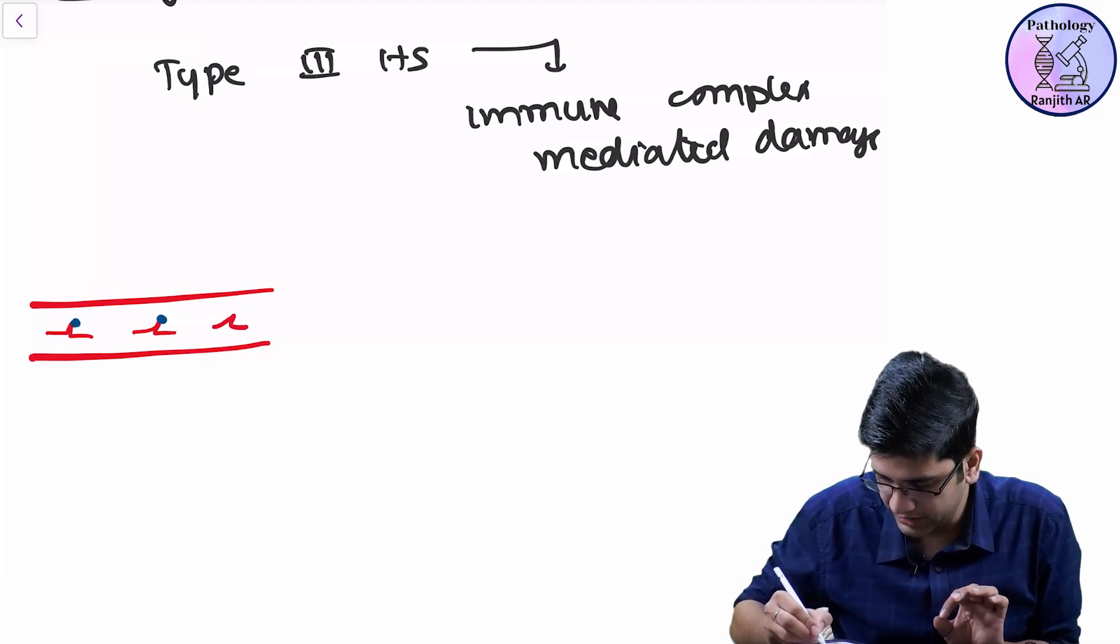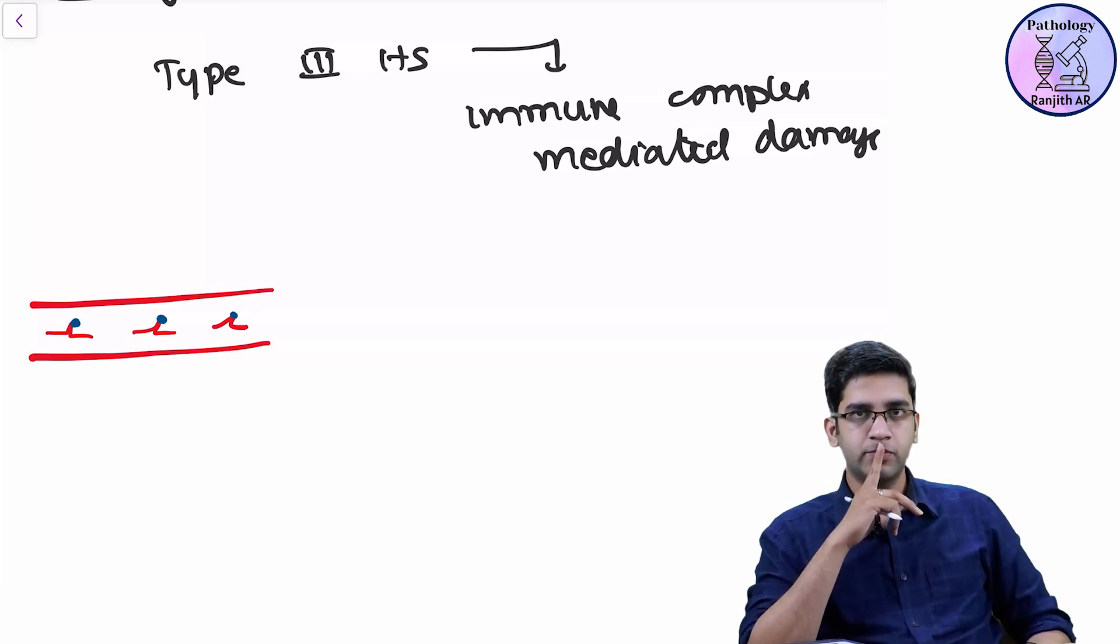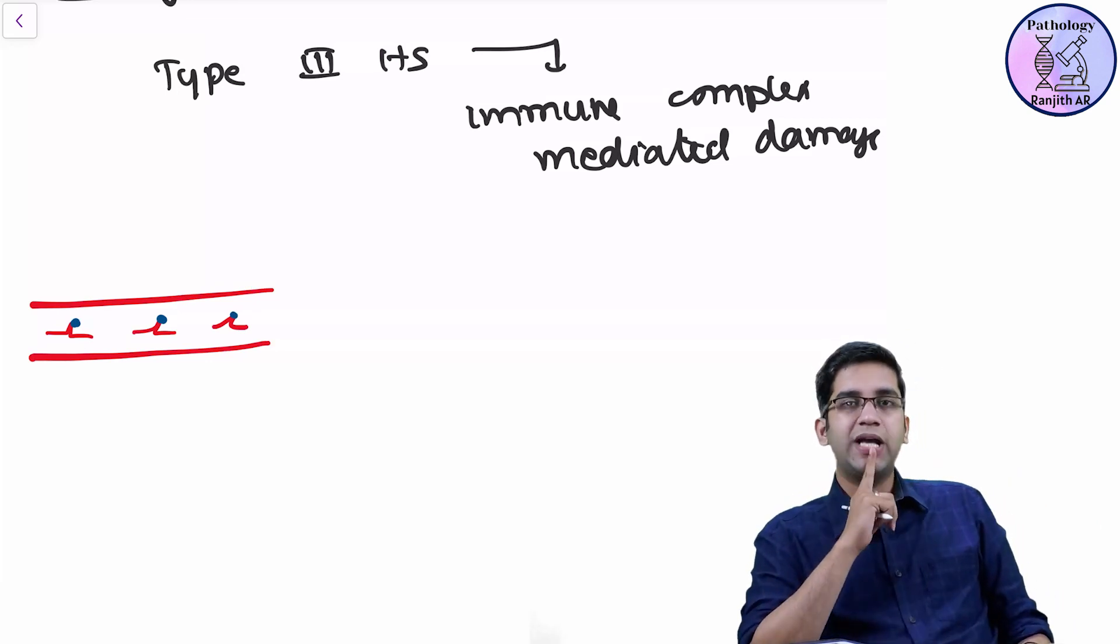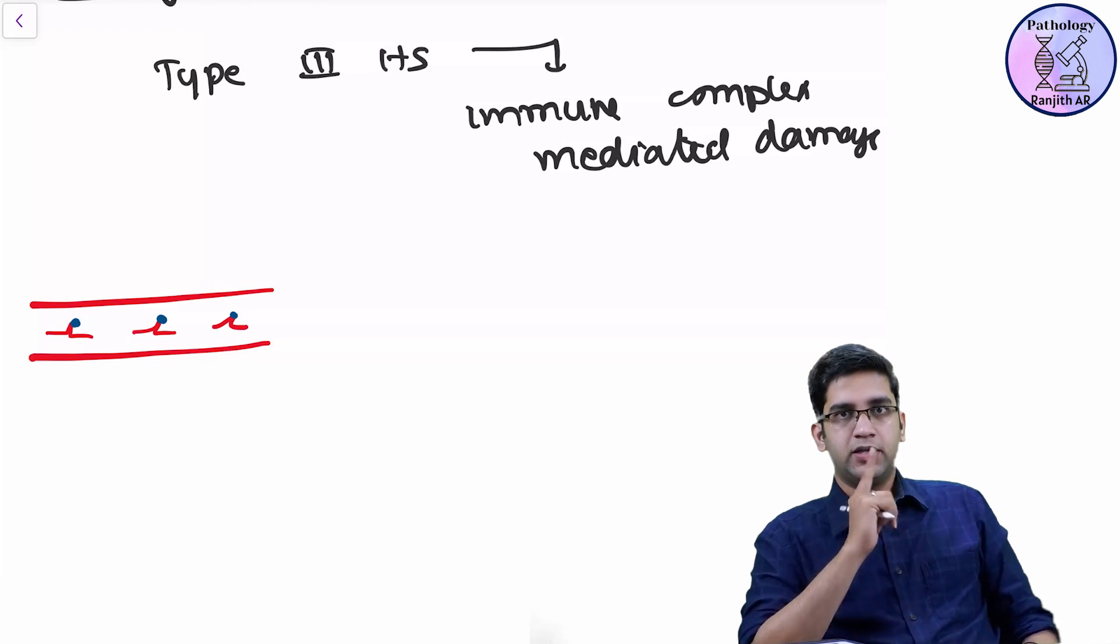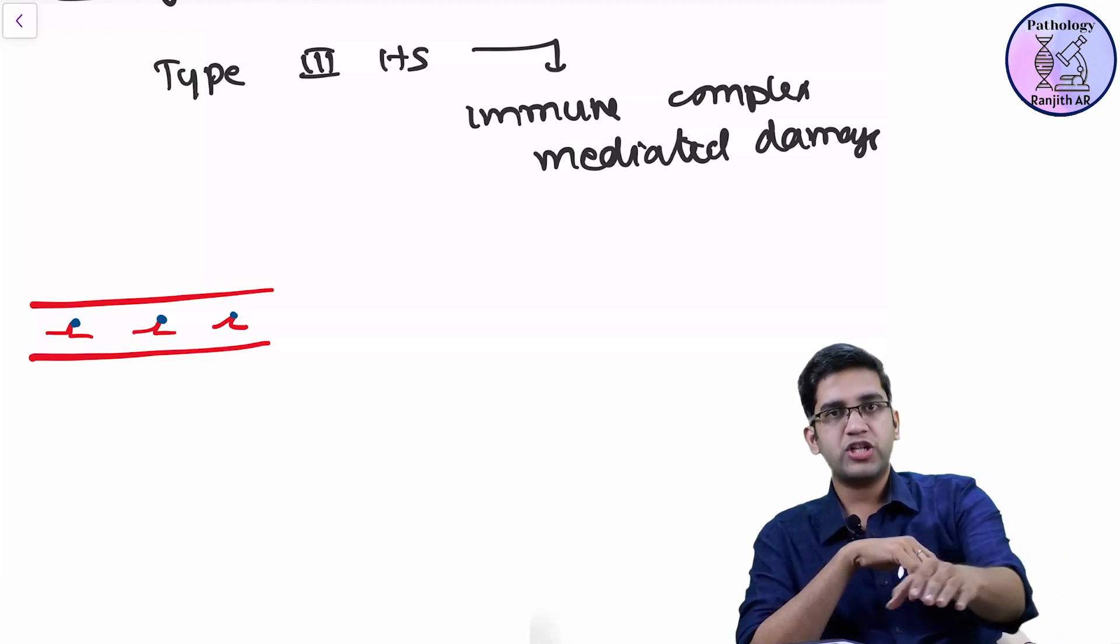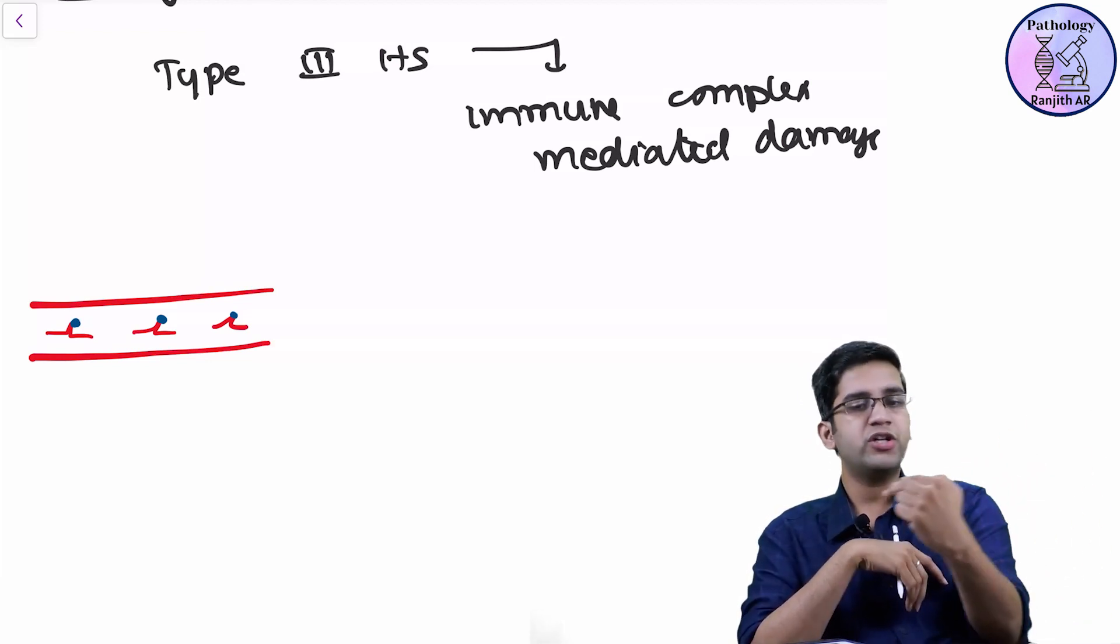Antibody attached antigen going like this in the circulation. Tell me, when will you have a trouble? When the immune complex gets deposited in my endothelium or if they are just in my circulation?